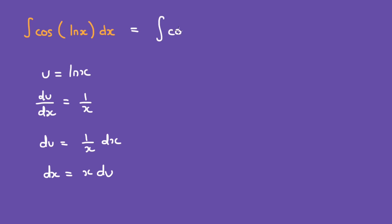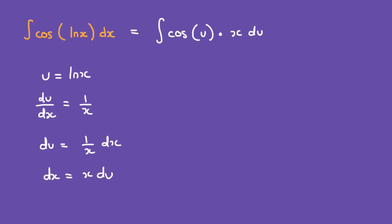We have the integral of cosine of u, and dx is x times du. So let me show you how to change this x into a u. If you look at this line here, we have u equals ln of x. Let's take the exponent on both sides, so we have e to the power of u is equal to e to the power of ln of x, which means e to the power of u is equal to x.